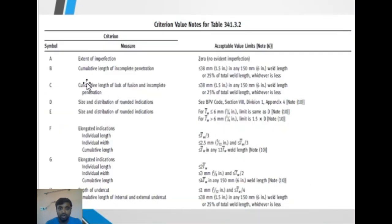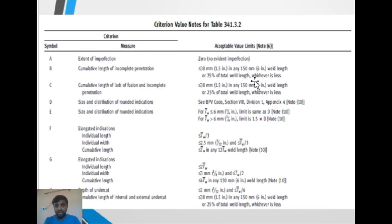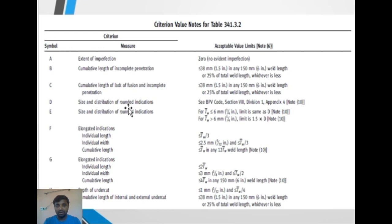Going through the defects: A — crack — extent of imperfection acceptable is zero. B — cumulative length of incomplete penetration — acceptable up to 38 mm in any 150 mm weld length. If it exceeds 38 mm in 150 mm, it is not acceptable. C — cumulative length of lack of fusion or incomplete penetration — same limit: 38 mm in 150 mm (6 inch weld length).